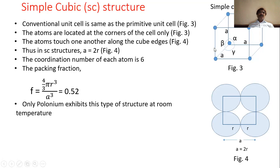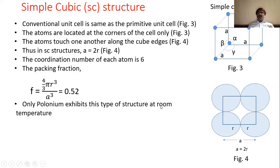Since atoms are located only at the corners, atoms touch each other along any side. The length of the side equals the lattice parameter a, and two atoms touch each other, so a = 2r. This is the key equation for the simple cubic structure. The coordination number in this case is 6, which is less than 12, confirming it as a loose packed structure.